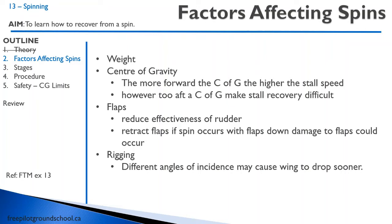Weight will obviously affect the spin, but more importantly the center of gravity will affect the spin. A spin is an aerobatic maneuver, so the pilot operating handbook will tell you the conditions required to spin the aircraft. For a Cessna 172, the aircraft must be within the utility category and must have a somewhat nose-forward center of gravity location. Even though the stall speed may be a bit higher with a forward CG, the recovery will be easier. This actually caused an accident where I'm from: a pilot who'd just gotten his license knew how to spin, had done it with his instructor many times, and decided to take his friends flying and spin the airplane — which is not a good idea.